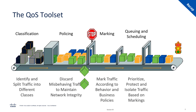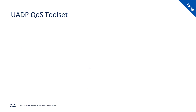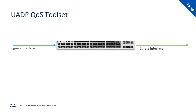Next we have queuing and scheduling. Queuing splits traffic into different queues, allowing different actions and different treatment per queue. Scheduling is the algorithm the switch uses to determine which queue can send traffic out. Finally we have shaping, which also limits and controls the amount of traffic leaving the system. The key difference from policing is what happens to excess traffic: with policing we drop it, whereas with shaping we queue the excess traffic and smooth out the traffic curve.